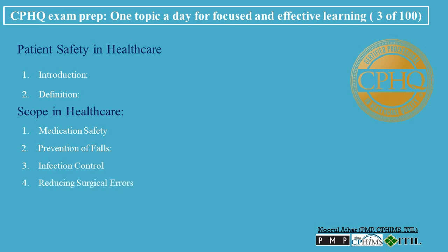Reducing surgical errors: Implementing surgical checklists, ensuring proper team communication, and double-checking surgical sites and procedures are measures taken to prevent surgical errors. Diagnostic accuracy: Efforts are made to reduce diagnostic errors, which could lead to inappropriate treatments or delayed care.